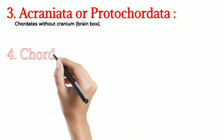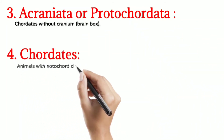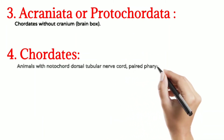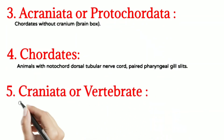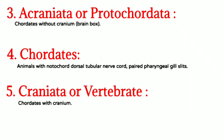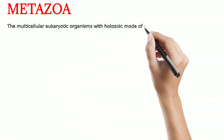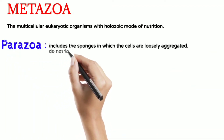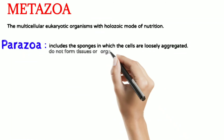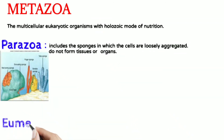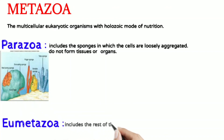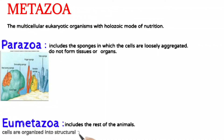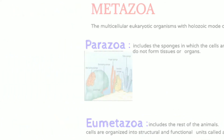Third is Craniata and Protochordata. Protochordata are chordates which do not have a cranium. Fourth group is Chordata — these are animals which have a notochord, dorsal tubular nerve cord, and pharyngeal gill slits. We belong to Craniata because we have a cranium. Metazoa includes all multicellular eukaryotes with holozoic nutrition. There are two subgroups: Parazoa, which includes sponges with loosely arranged cells not organized into tissues, and Eumetazoa, which includes all other animals where cells form tissues and tissues form organs.